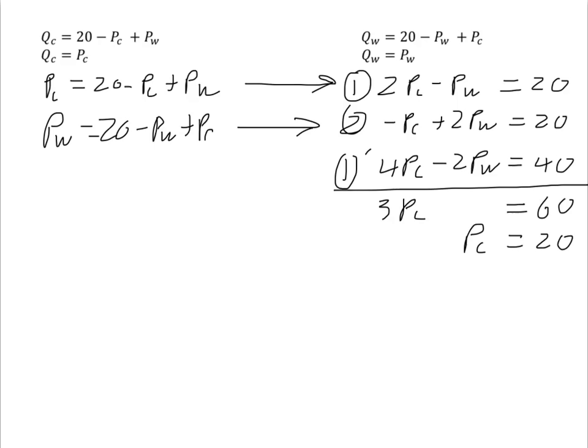Since QC is equal to PC, I've got QC equals 20. And substituting these back into the demand curve for corn, I have 20 is equal to 20 minus 20 plus PW or PW is equal to 20. Which in turn implies that QW is equal to 20. And so we have our general equilibrium.